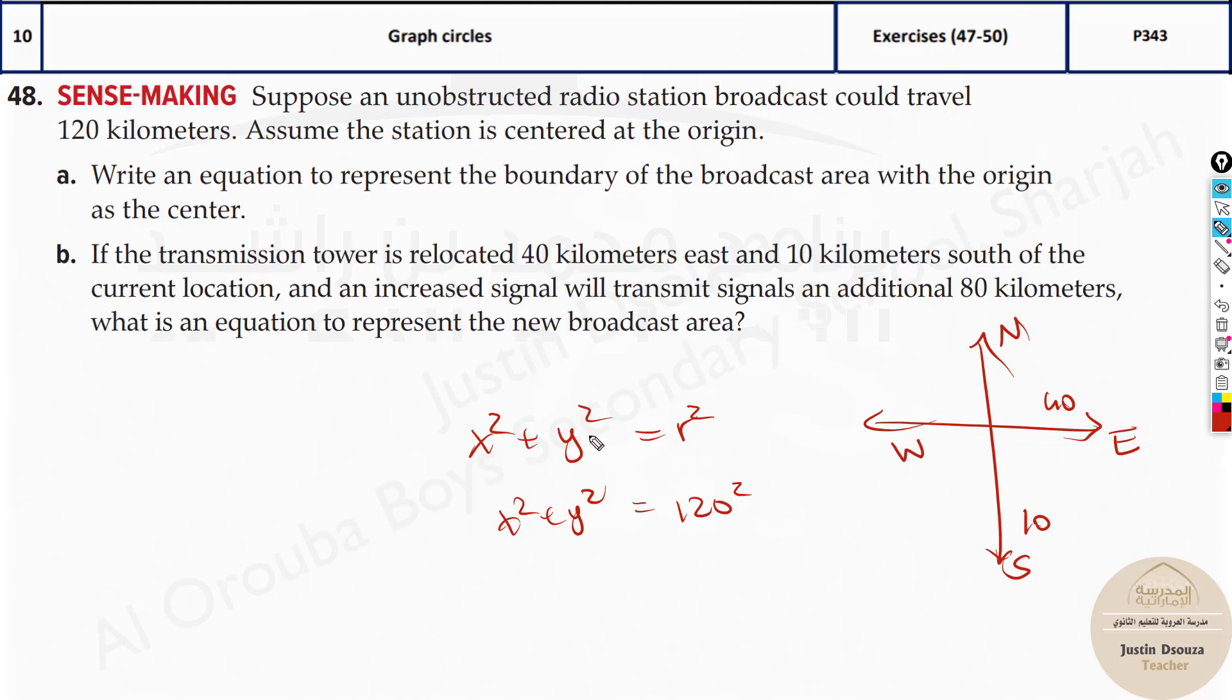Of the current location. Current was origin, right? Now, we have to use this x minus h the whole square. It's x minus h the whole square plus y minus k the whole square equals r squared. And an increased signal will transmit signals and additional 80 kilometers. What is the equation that represents the new broadcast area?